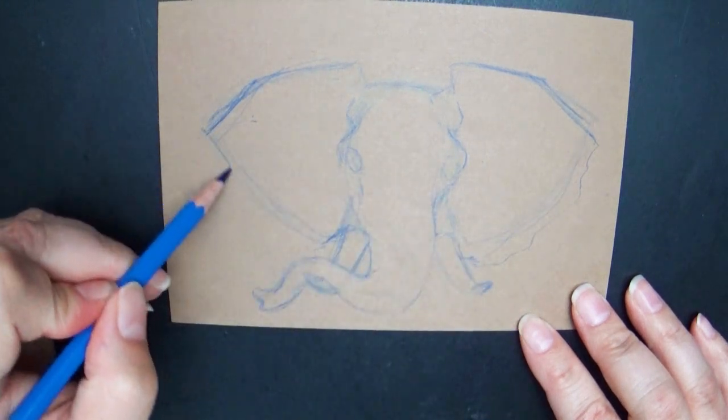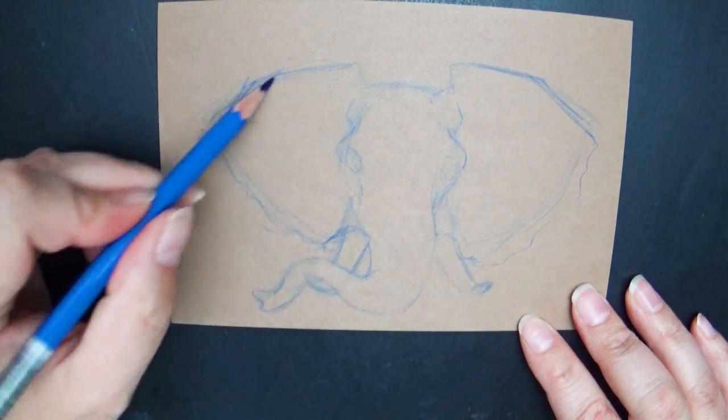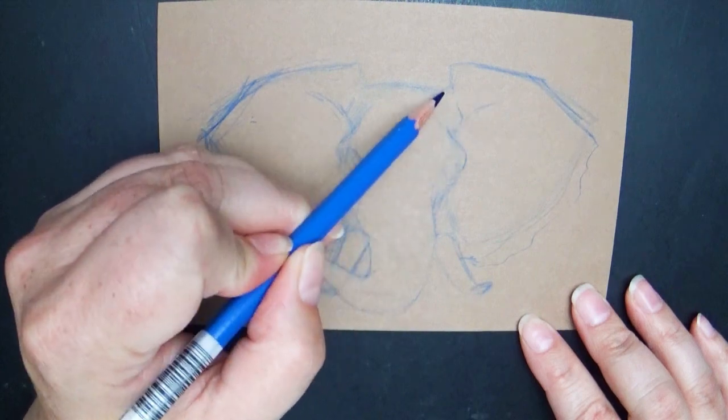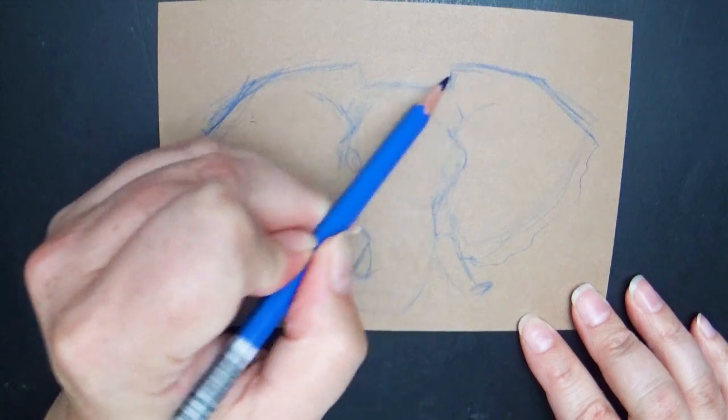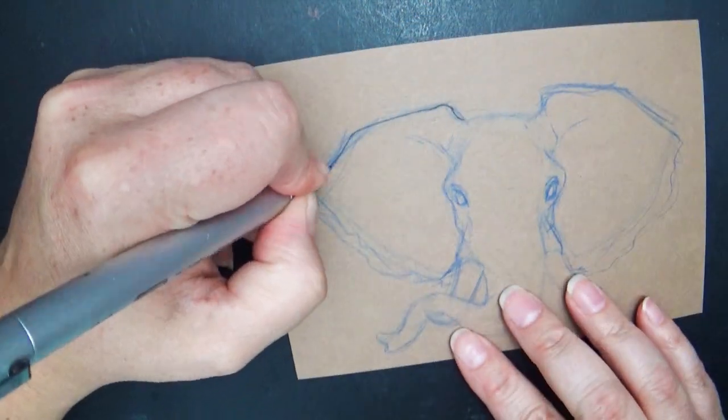After this point if you want to you of course can ink it in which I did, or you could add in just some regular pencil shading and stuff like that. It totally depends on what you want to create with your piece. But I kind of had this really fun idea for my elephant so I wanted to ink him in.